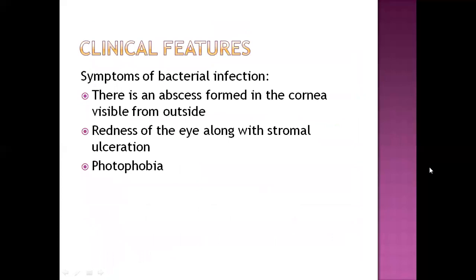After pathophysiology, there are important clinical features arranged according to priority. For bacterial keratitis: an abscess forms in the cornea which is visible from outside — the abscess is a product of infection. Next is redness of the eye along with stromal ulceration. Next is photophobia — the patient feels difficulty when exposed to any kind of light, natural or artificial.